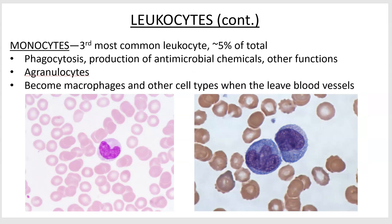Monocytes are big phagocytes. When they exit your blood, they're called macrophages. You might hear them called dendritic cells or alveolar macrophages — they've got a bunch of different names. These are pretty much monotaskers in that they phagocytize. They do produce some other chemicals as a byproduct, but all cells will do that.